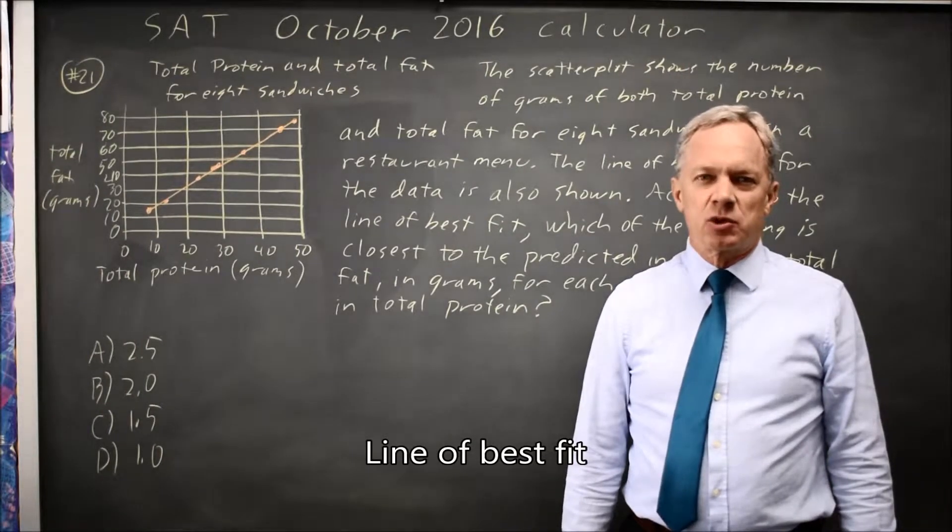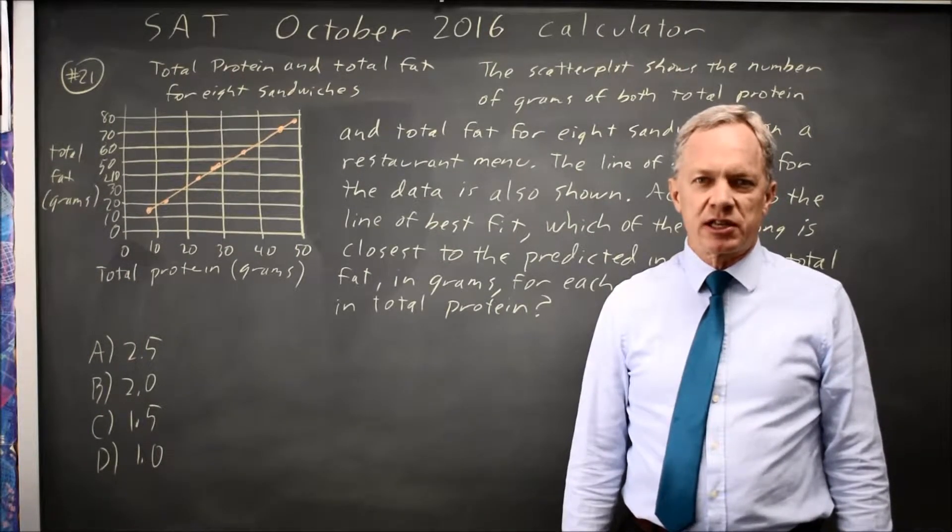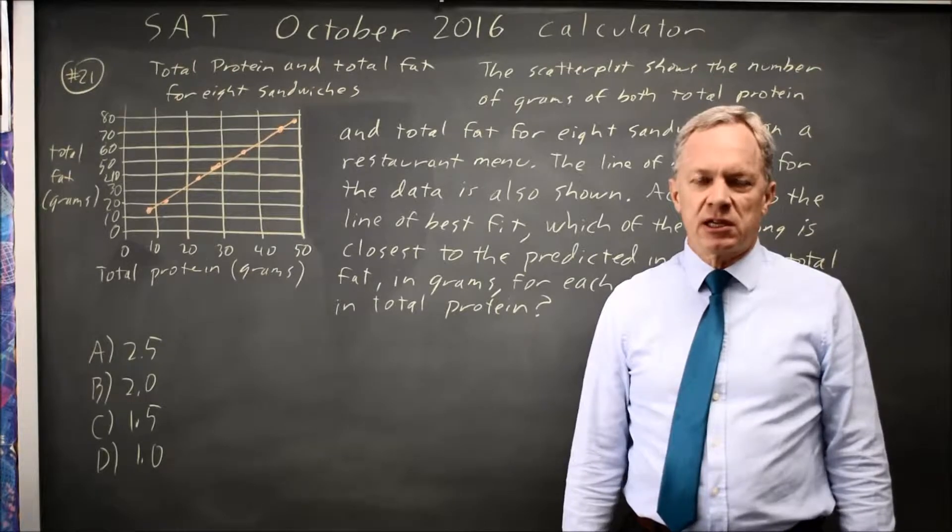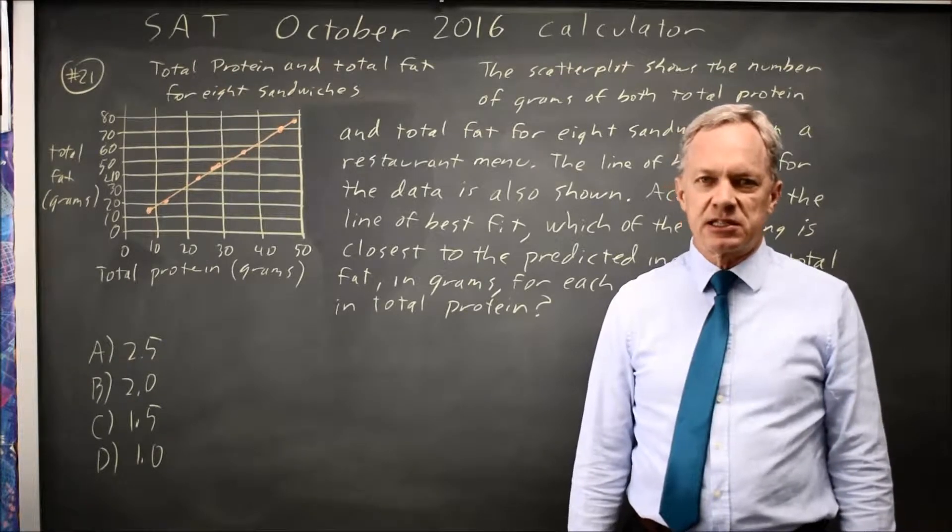This is calculator question number 21 for practice test 7 in the 2018 College Board Prep Book. It's also the October 2016 SAT.